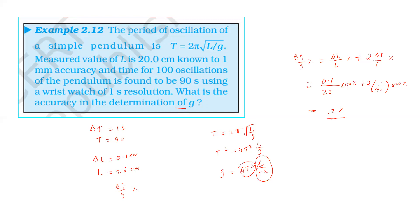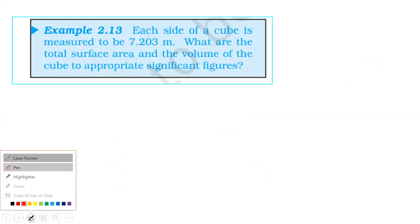Next question. Each side of a cube is measured to be 7.203 meters. What are the total surface area and the volume of the cube to appropriate significant figures? We have 7.203 meters. That is 4 significant figures. In multiplication and division, the answer is the least significant. First, surface area.